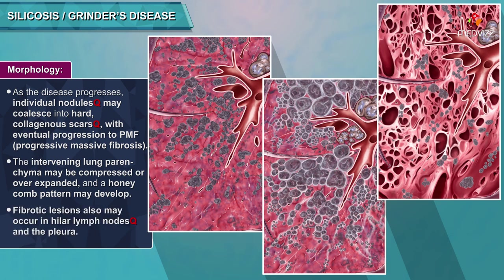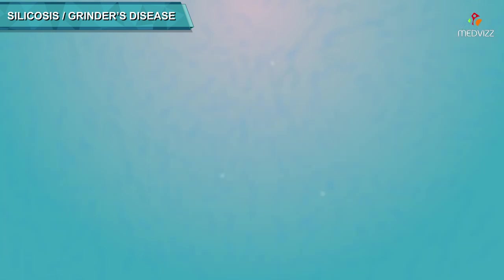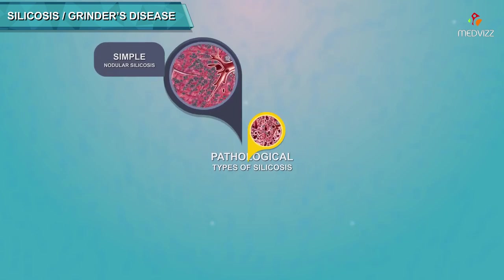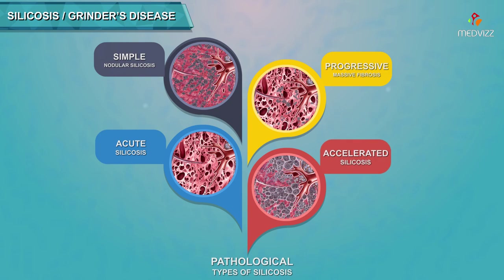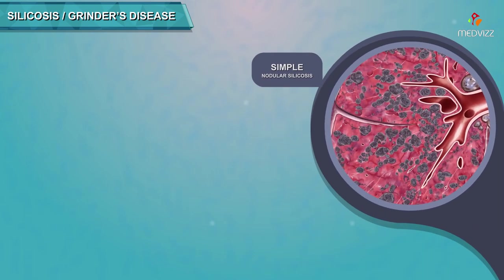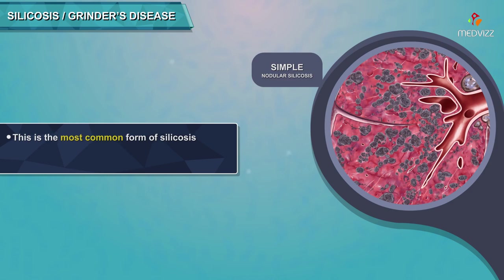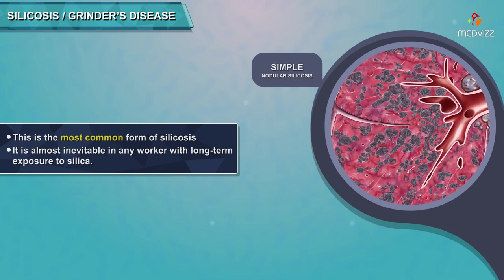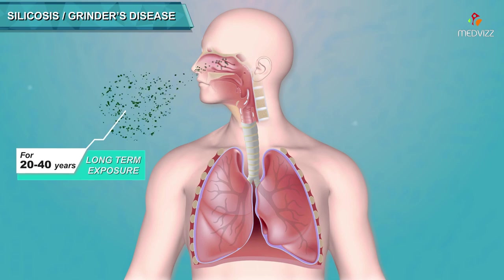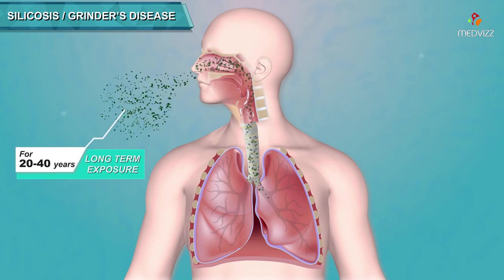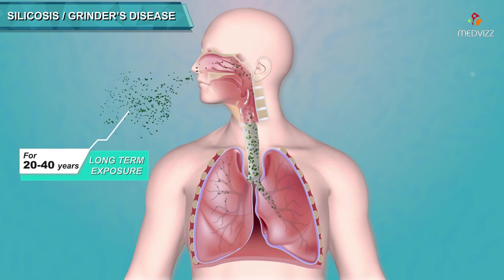Fibrotic lesions may also occur in hilar lymph nodes and the pleura. Pathological types of silicosis include: (1) Simple nodular silicosis, (2) Progressive massive fibrosis, (3) Acute silicosis, and (4) Accelerated silicosis. Simple nodular silicosis is the most common form, almost inevitable with long-term silica exposure — typically 20–40 years, sometimes only 10 years — resulting in silicotic nodules less than 1 cm, usually 2–4 mm in diameter.